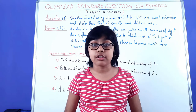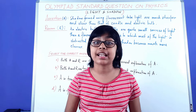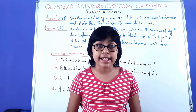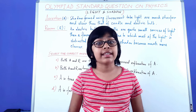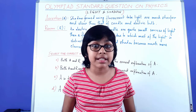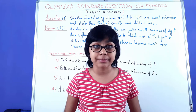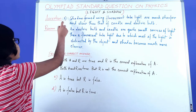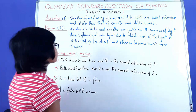First let us understand what an assertion is. An assertion is a declaration — a declarative statement that says that something is going to happen or not. Every declarative statement has some reason behind it, an explanation that we call the reason. Here we have assertion denoted by A and reason denoted by R.